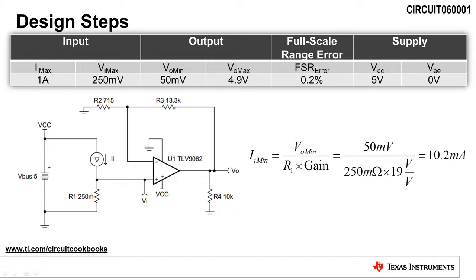Either way, the design is bound by the output swing limitations of the amplifier. In this case, we can use the minimum output voltage, gain, and shunt resistance to calculate the minimum load current that can be measured without violating the op amp's output swing specification. For this design, the minimum load current required for linear operation is 10.2 milliamps.